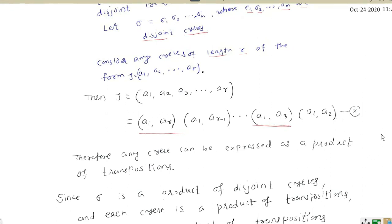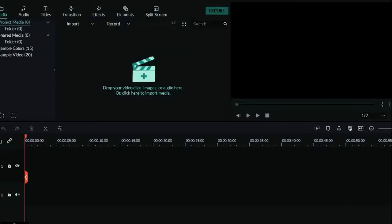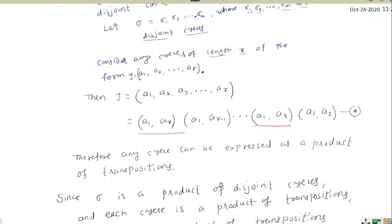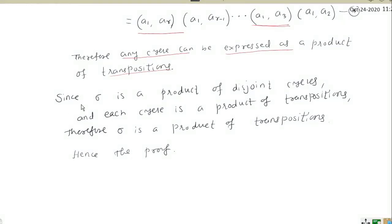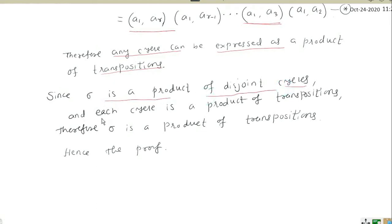This product of transpositions gives the cycle, which can be written as the first symbol paired with the last symbol, then the first symbol with the second-to-last, and so on. Therefore any cycle can be expressed as a product of transpositions. Since sigma is a product of disjoint cycles sigma_1, sigma_2, ..., sigma_m, and each cycle is a product of transpositions, therefore sigma is a product of transpositions. Hence the proof of the theorem.